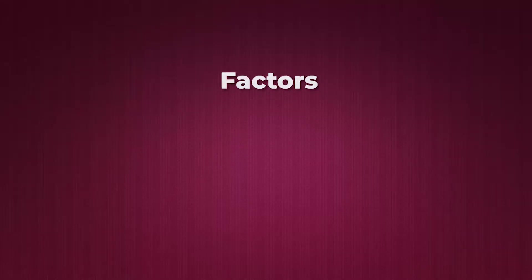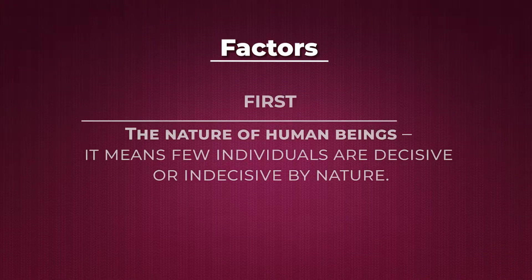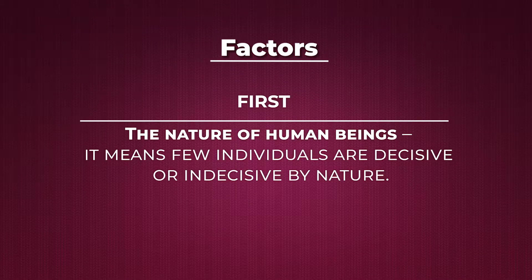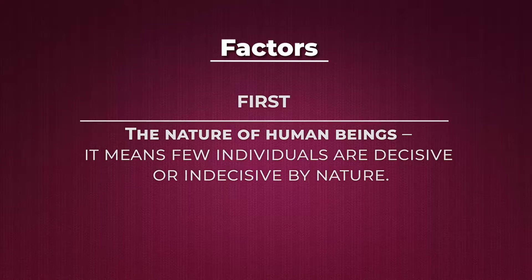So what do we understand by decision making? By decision making we understand a process through which we prefer one set of decisions or actions over other alternative set of decisions. This process of decision making is influenced by three factors. One, the nature of human beings — it means few individuals are decisive or indecisive by nature.